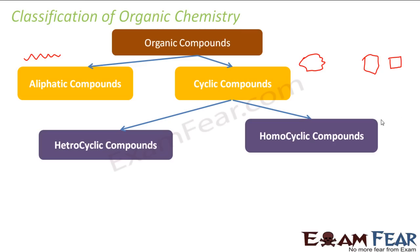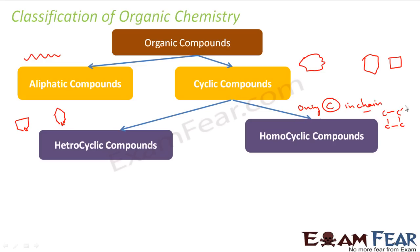Homocyclic means the cycle will have only carbon in the ring. For example, a cycle of carbons with hydrogens attached — the ring has only carbon atoms. In heterocyclic, you can have other atoms in the ring as well. For example, tetrahydrofuran has oxygen in the ring, and piperidine has nitrogen in the ring. So in homocyclic, only carbon is in the chain, whereas in heterocyclic, a non-carbon atom such as oxygen or nitrogen can appear in the ring chain.